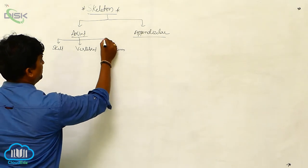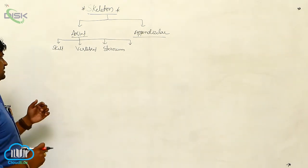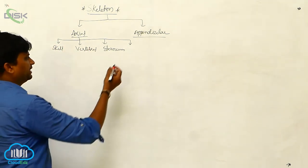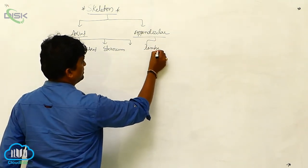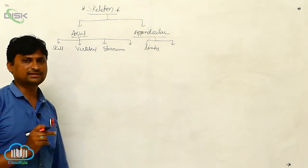The third component is the sternum. So the axial skeletal system consists of skull, vertebra, and sternum. The appendicular system consists of limbs.